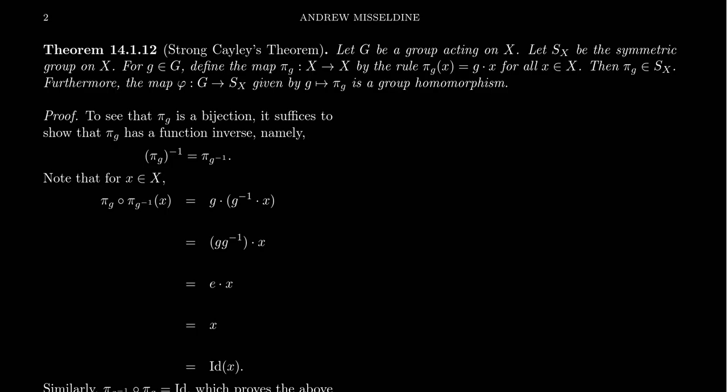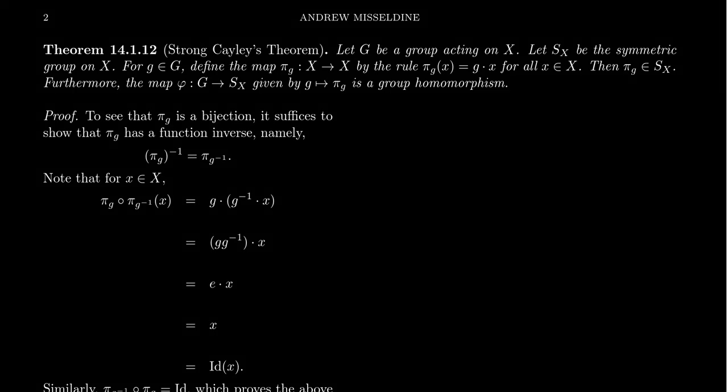In this video, I want to provide a stronger version of Cayley's theorem we proved in Abstract Algebra 1, and so without a better name, we're going to call it the Strong Cayley's theorem. Remember previously that Cayley's theorem says that every group is isomorphic to a subgroup of S_n, so essentially we can think of every group as a permutation group. The proof utilized the fact that we can identify group elements with permutations by associating to that group element its left multiplication.